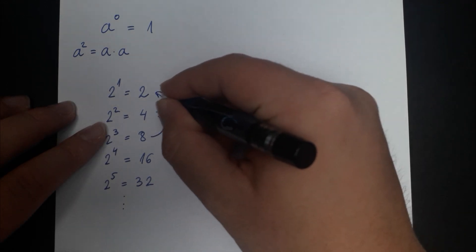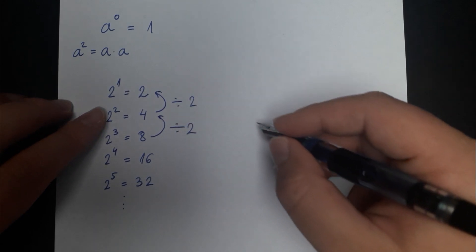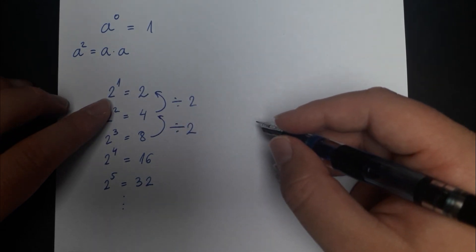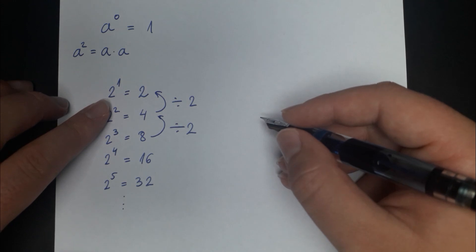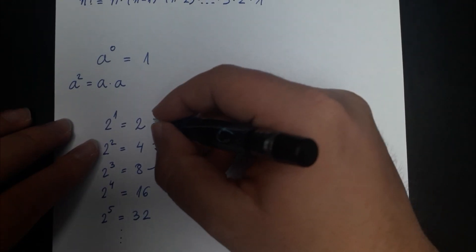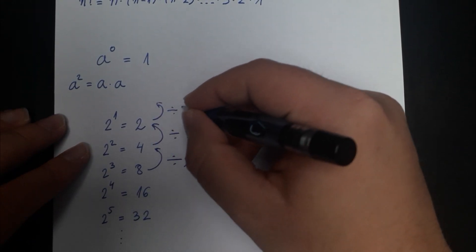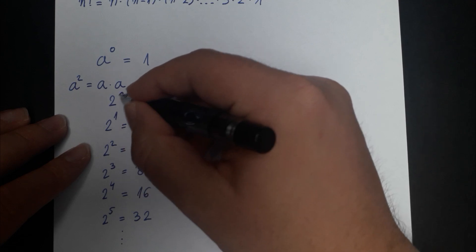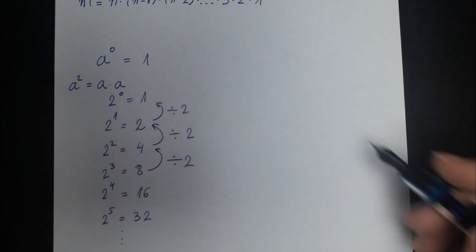When you divide by 2 again you get that 2 to the first power is equal to 2 and when you get to here there is no reason to think that the pattern changes. By dividing by 2 again we get that 2 to the power 0 is equal to 1.